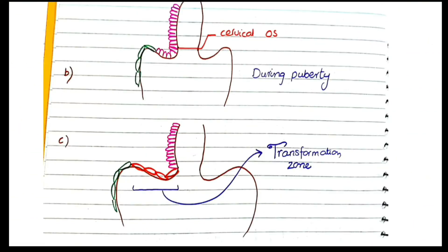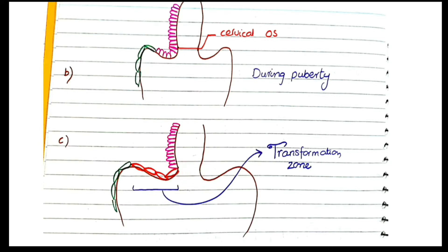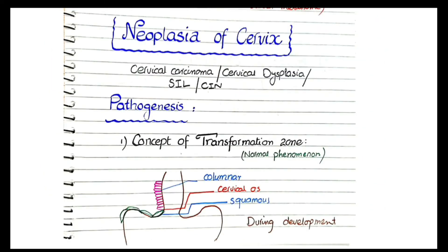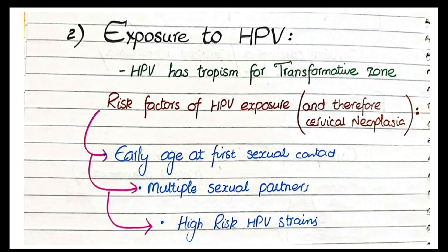To summarize: the transformation zone is the area of the ectocervix where the columnar cells transform or undergo metaplasia into squamous cells. The squamous-columnar junction moves back to the level of the cervical opening, but this was achieved through transformation — metaplasia back to its original developmental level.